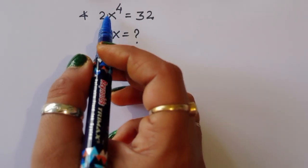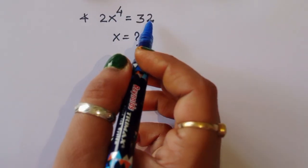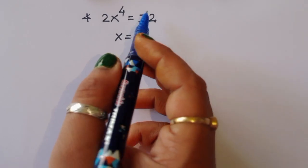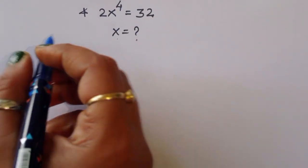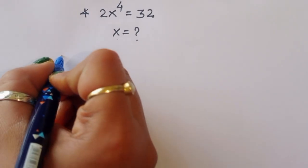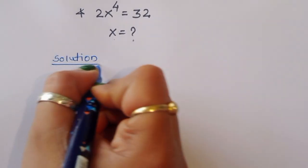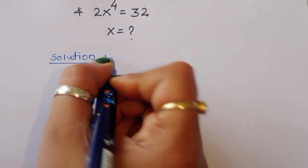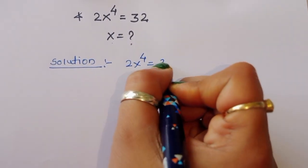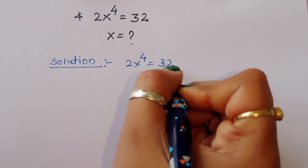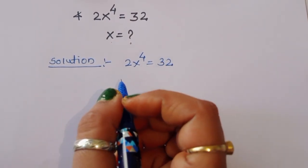The question is: given 2x⁴ = 32, we have to find out the value of x. So 2x⁴ = 32 — let's see the solution.